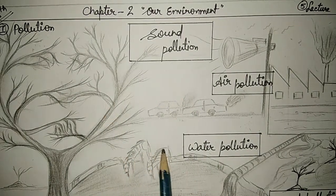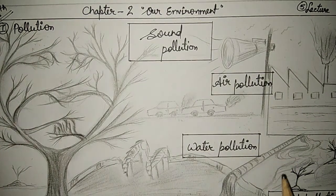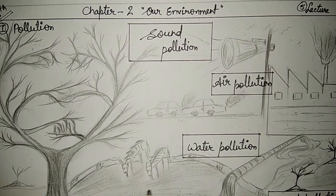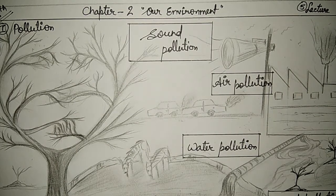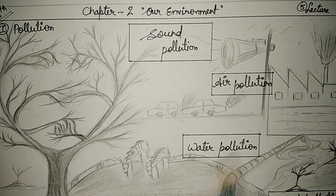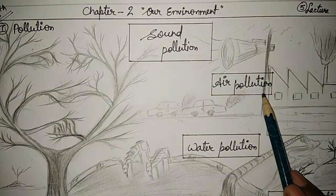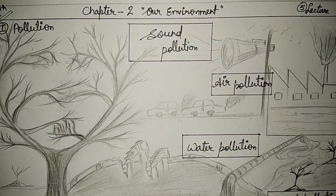This polluted chemicals comes from factories and because of this water becomes dirty. This is called water pollution — so the mixing of chemicals in water is called water pollution. Similarly, mixing of smokes and harmful gases in air is called air pollution.